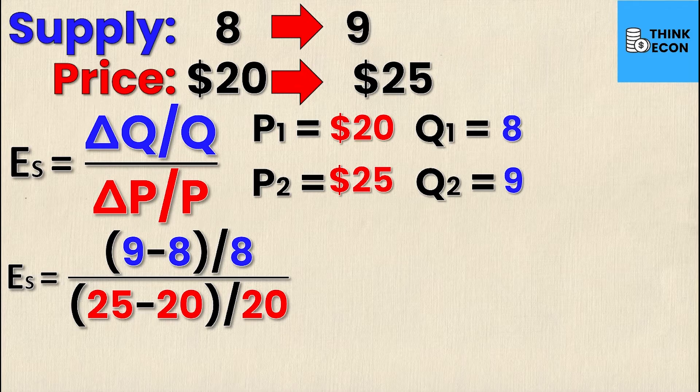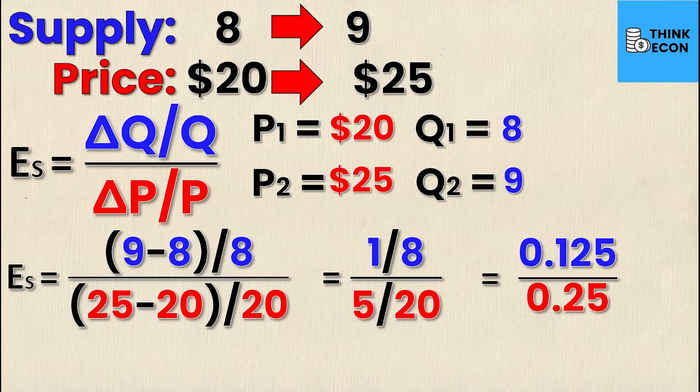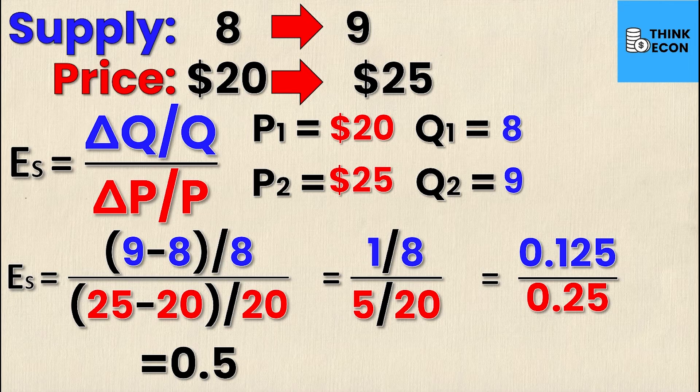Using simple algebra, I can simplify this to 1/8 over 5/20, or 1 quarter. If I want to turn this into decimals, that will give me 0.125 divided by 0.25, or 1/8 over 1 quarter, which is simply equal to 0.5.